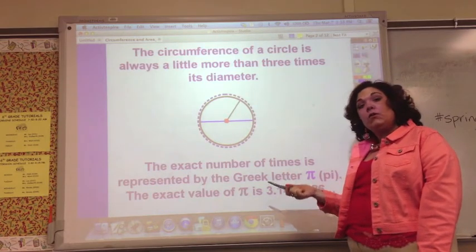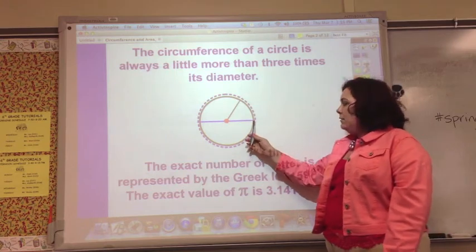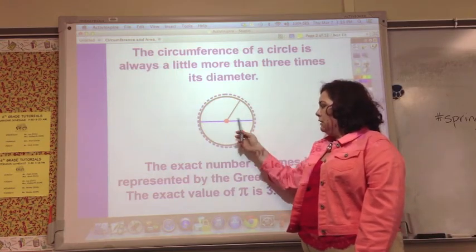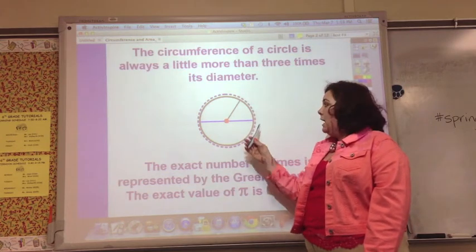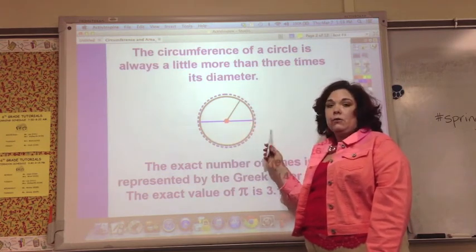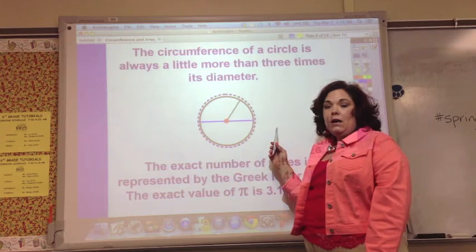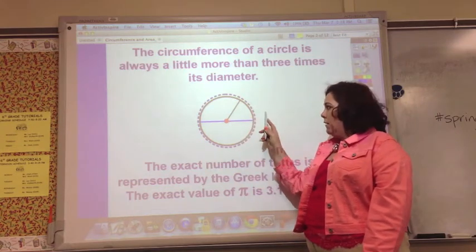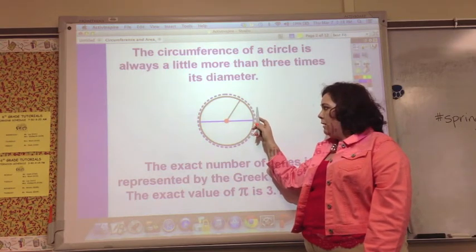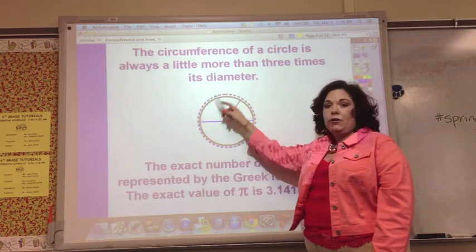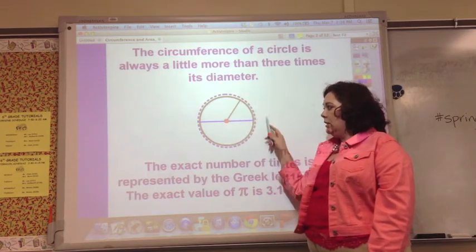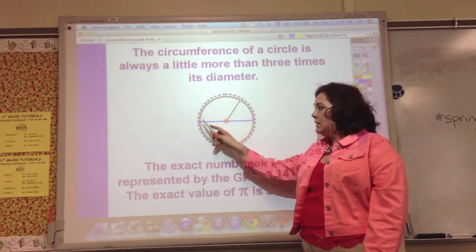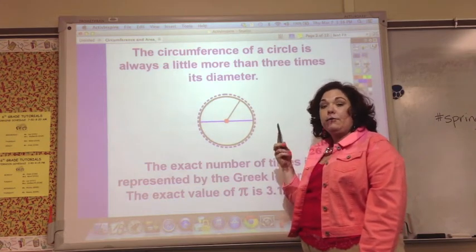No matter what size circle, you can take the diameter, which is the distance across the circle, multiply it by a little over three, and get the distance around the circle. This is like the distance around a table. If you were going to put a skirt around the table, called a table skirt, this would be the distance that you would need. You could measure the diameter, do times three, a little over times three, and get the distance around.